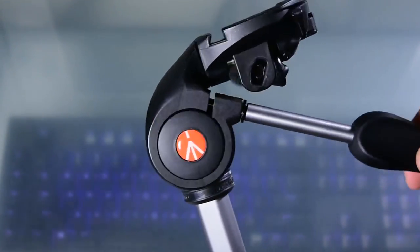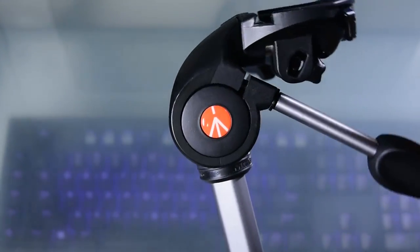The bottom handle on the head allows you to point the camera up, down, left, and right, and then just twist the handle to the left to lock it in position.